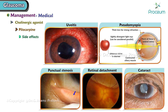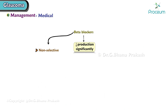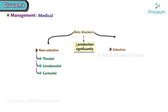Side effects of pilocarpine include uveitis, pseudomyopia, punctal stenosis, retinal detachment, and cataract. Beta blockers work by decreasing production significantly. Non-selective beta blockers used are timolol, levobunolol, and carteolol. Selective beta blockers used are betaxolol.